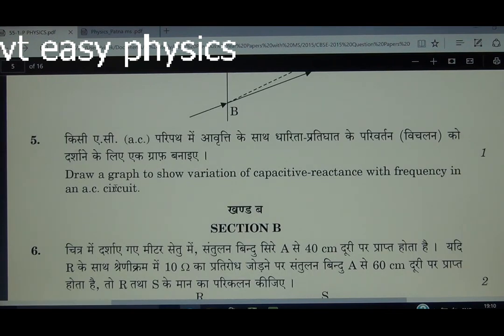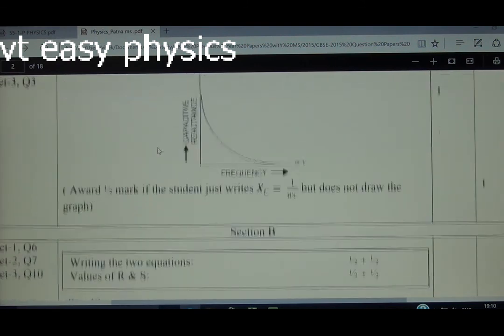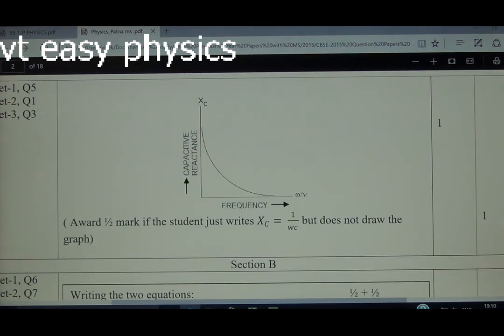Question number 5. Draw a graph to show variation of capacitive reactance with frequency in an AC circuit. More than capacitive reactance, inductive reactance can also be asked. The graph will be rectangular hyperbola here. But if it is inductive reactance, then the graph will be a straight line like Ohm's law.